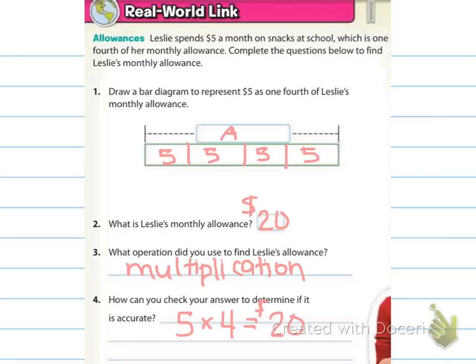All right, here are the answers. For number one, it said that it's in fourths, so I separated it into fourths. And I knew each spot was $5. So ultimately, I knew I was going to multiply 4 times 5 to equal A, which was the allowance for Leslie. And then Leslie's monthly allowance is going to be 5 times 4, or 5 plus 5 plus 5 plus 5. So that's multiplication, and 5 times 4 is $20. That's how we check our work.